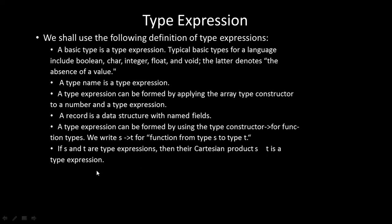So to summarize, we define type expressions by: first, basic types; second, type names; third, applying the array type constructor; fourth, records as data structures with named fields; fifth, function types using the arrow constructor; and sixth, if S and T are any type expressions, their Cartesian product S × T is also a type expression.